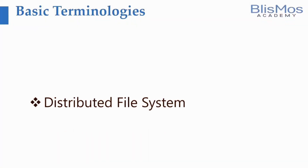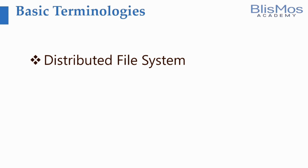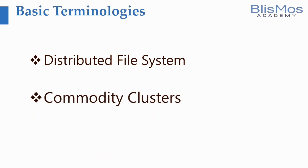Some of the basic terminologies are: one is the distributed file system, and the second thing is commodity cluster. These are the two important terminologies for us to understand big data. Let's look at them one by one.